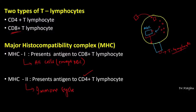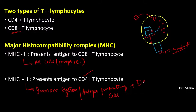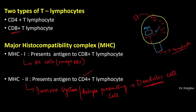MHC2 is present in cells of the immune system, more specifically called antigen presenting cells. A very good example of an antigen presenting cell is the dendritic cell. The MHC binds to foreign antigenic fragments that have entered the cell and displays them along with itself on the cell surface, presenting the foreign antigen to the T-lymphocyte.